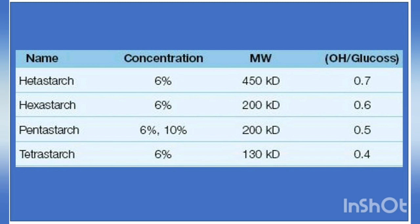The prefix of the HES preparation indicates the molar substitution ratio: pentastarch equals 0.5, tetrastarch equals 0.4. Hetastarch is the most commonly used HES preparation in the United States, with a high molecular weight of 450 kD and a high molar substitution ratio of 0.7. Tetrastarch is the most recent HES preparation introduced in the United States, with the lowest molecular weight of 130 kD and the lowest molar substitution ratio of 0.4; it is available as Voluven.